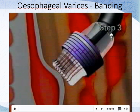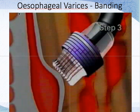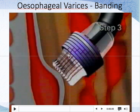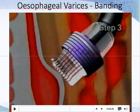Now let's have a look at how banding is done. This is a longitudinal section of the esophagus — you can see the varices and the tip of the endoscope. The banding equipment is mounted on the tip of the endoscope before you do the endoscopy. There are many bands available so with one endoscopy you can band many varices. You deploy these bands onto the varix. The endoscopist views the varices through the endoscope and bands them.